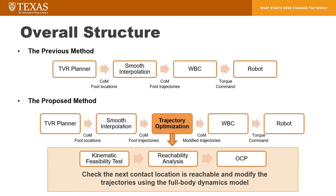In our previous work, we planned the center of mass trajectory and foot location using a TBR planner and generated swing-foot trajectory using smooth interpolation like B-spline or cubic spline. Trajectories of center of mass and foot are controlled by a whole-body controller. However, this paper proposes an additional part consisting of kinematic feasibility test, reachability analysis, and optimal control for modifying the trajectory.